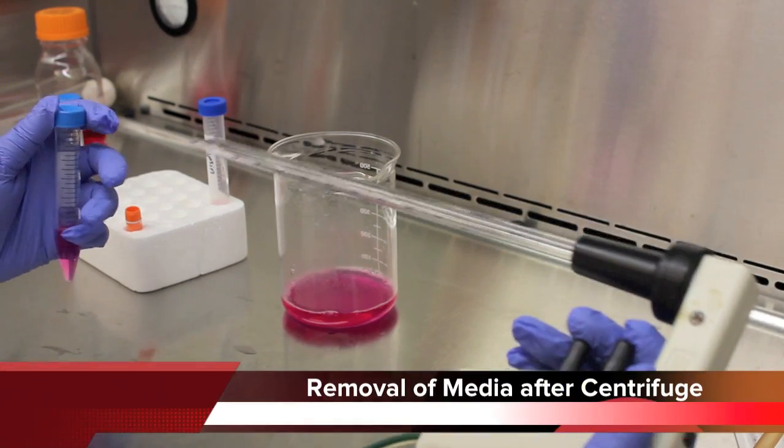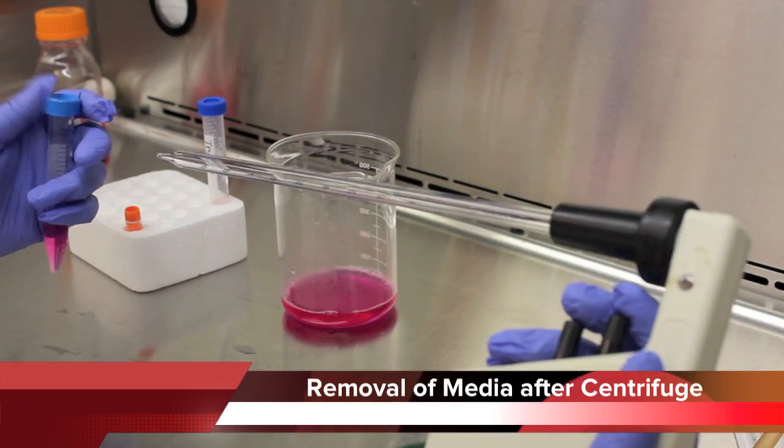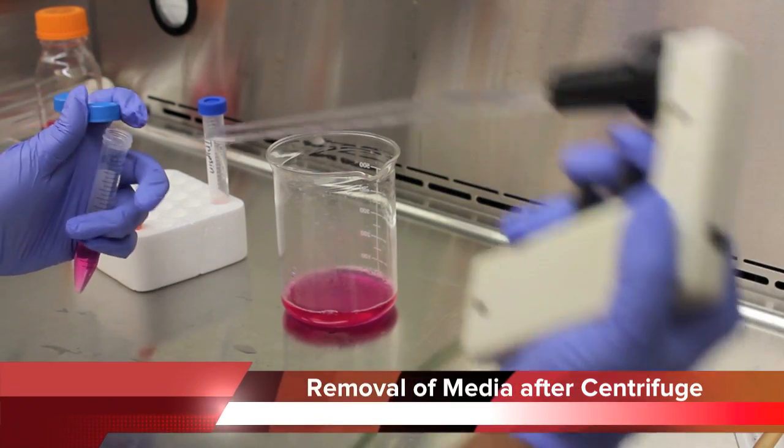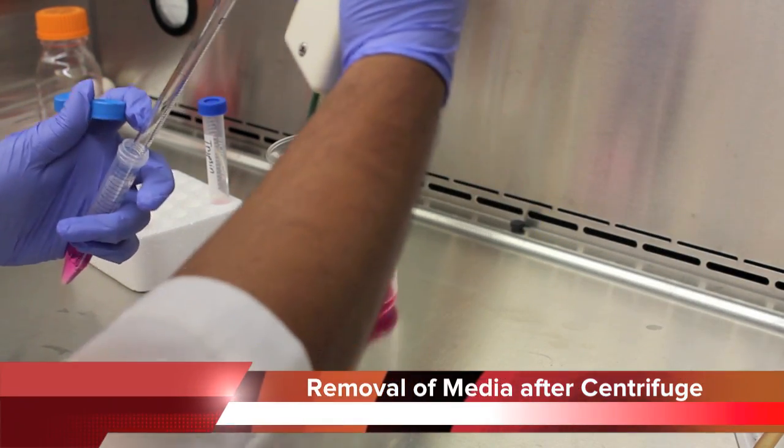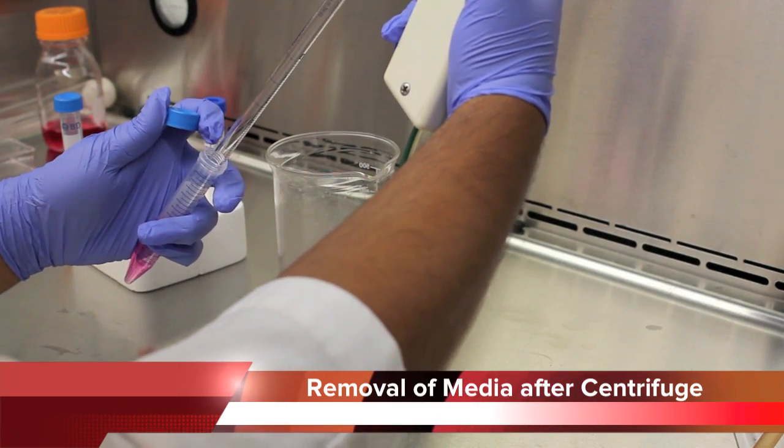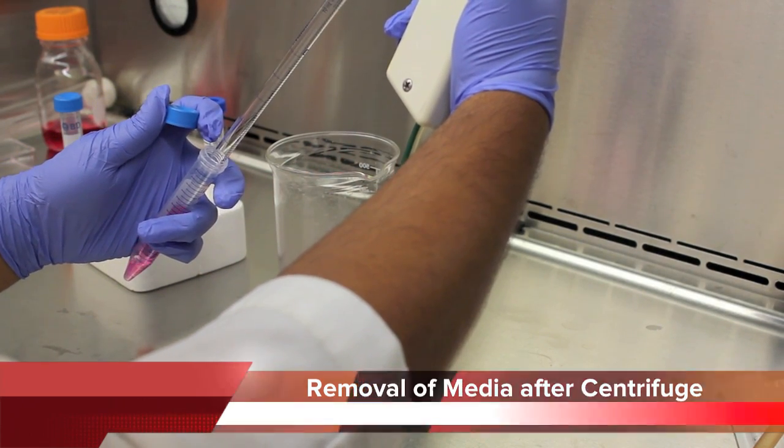After 5 minutes in the centrifuge, we remove the supernatant, either pouring off, or in our case, taking it off with the pipette, so that all that remains is the pellet of cells.